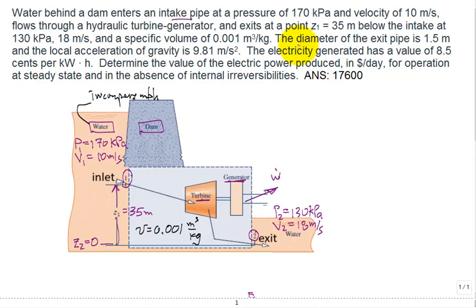One ramification is that the specific volume is constant. There's no change. The specific volume at inlet state 1 is the same as at exit state 2. Continuing to read the problem, we have the diameter of the exit pipe, D at the exit is 1.5 meters. No diameter at the inlet. And the local acceleration of gravity G is equal to 9.81 meters per second squared.